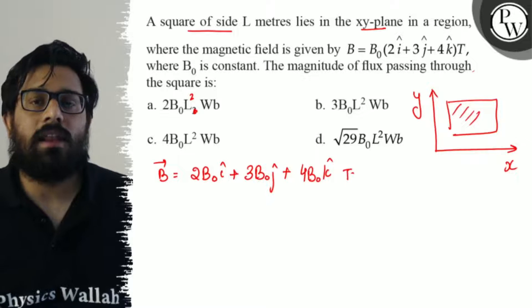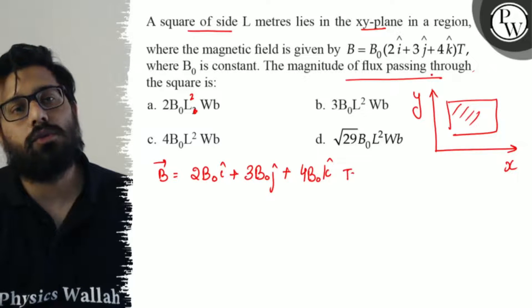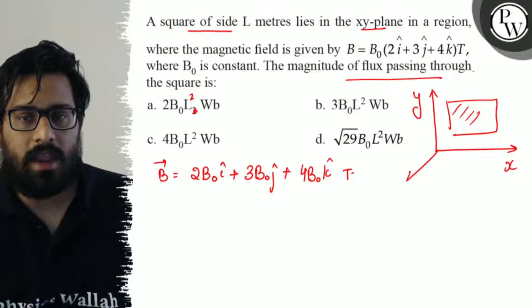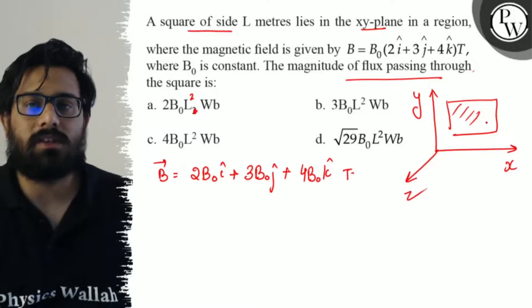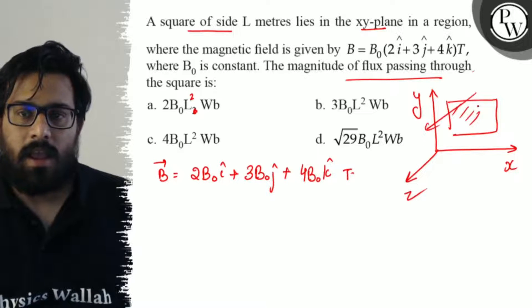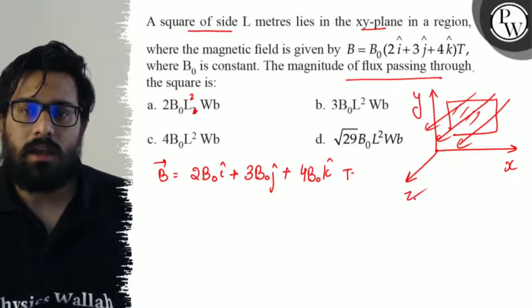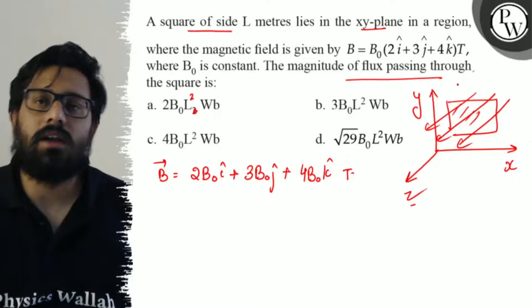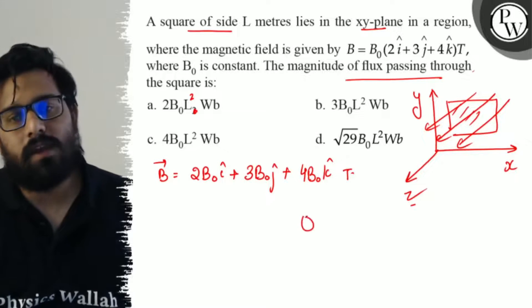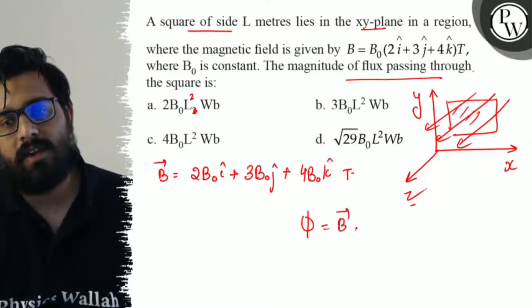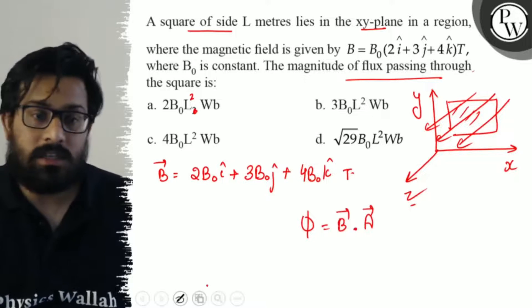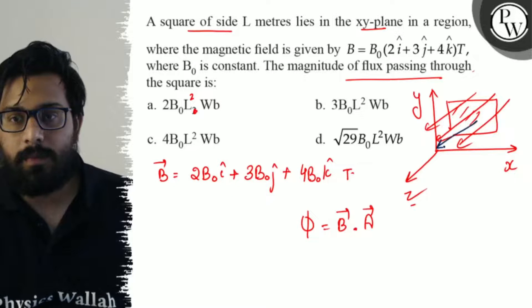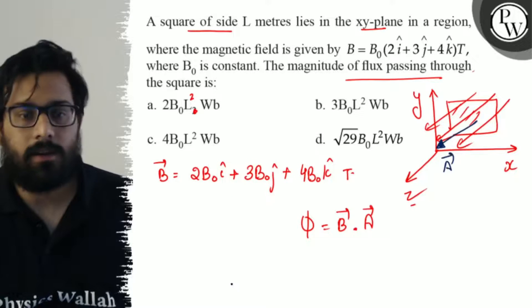Now you have to calculate the value of flux passing through the square. Flux φ = B⃗·A⃗, and since the area vector is along the z-axis, this is our area vector.